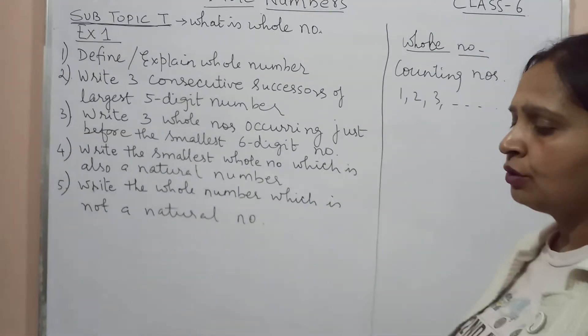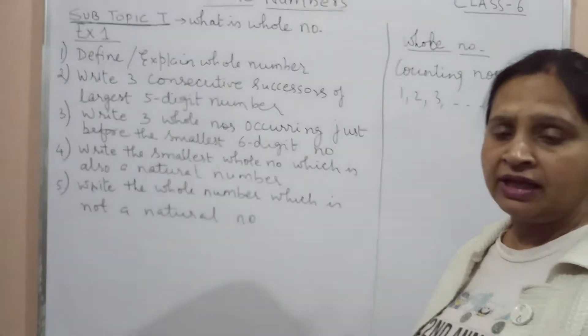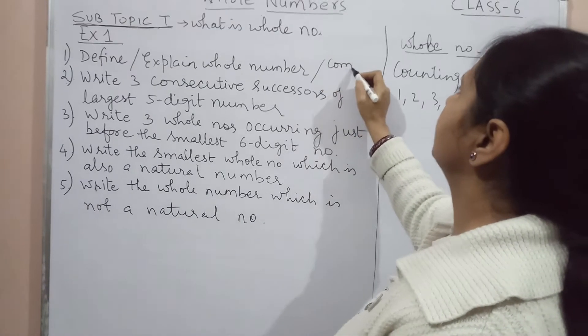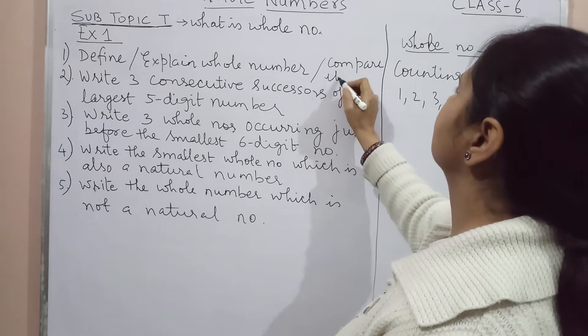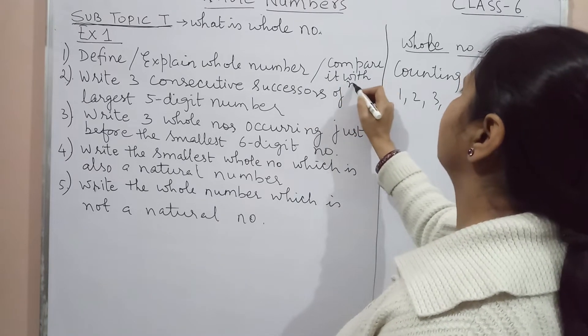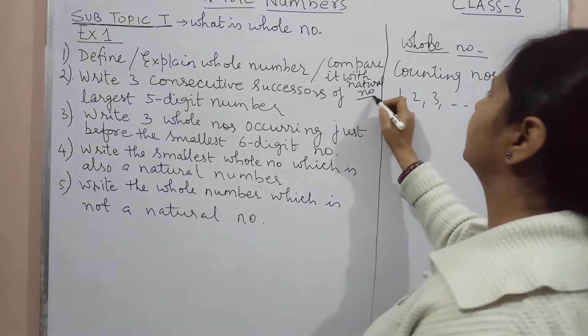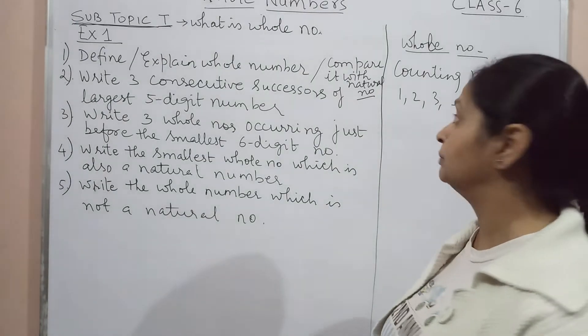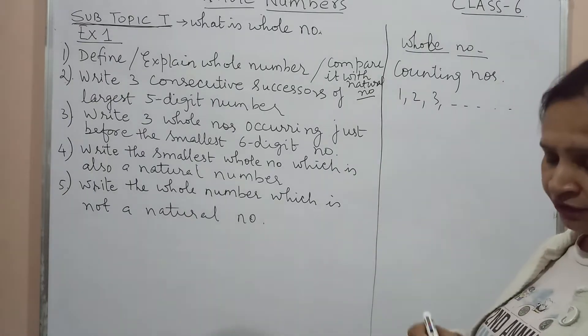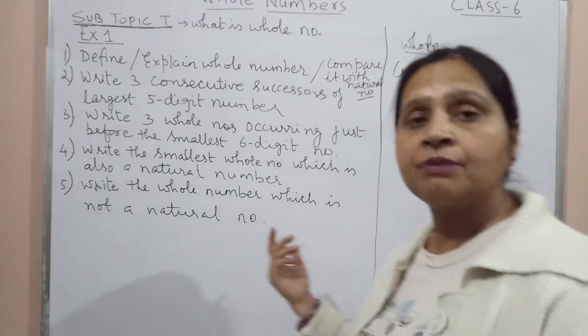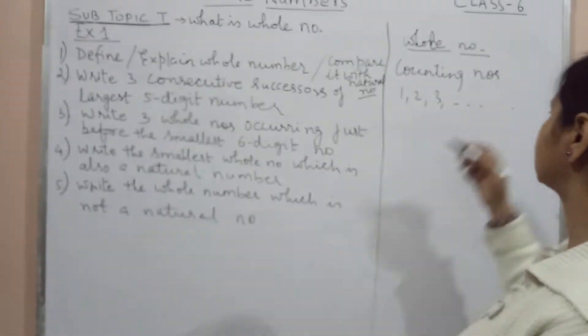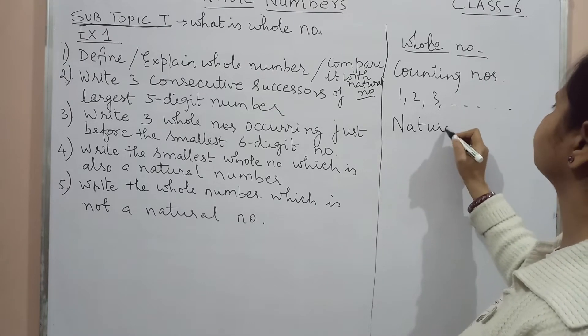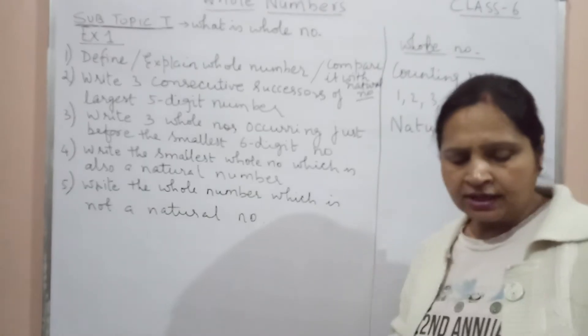Now these counting numbers were given a name, that is natural number. Here I am adding to this, compare it with natural number. I think in class 5 you have not heard of this word that is natural number, so let us also know what is natural number. Now counting numbers we all know, we are aware of the counting numbers. Class once counting numbers 1, 2, 3, 4, all these things they are called counting numbers and we call it as natural numbers. Now they are all natural numbers.